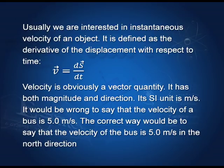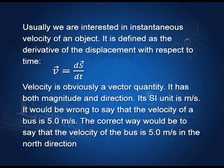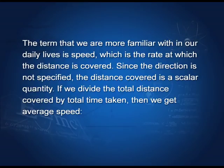Therefore, it would be wrong to say that the velocity of a bus is 5.0 meters per second. The correct way would be to say that the velocity of the bus is 5.0 meters per second in the north direction. Remember, a vector needs both magnitude and direction for its description. In ordinary life we do not use velocity very much — we are used to the term speed.